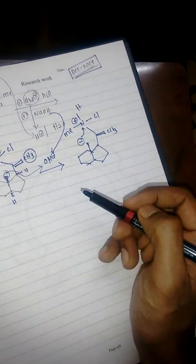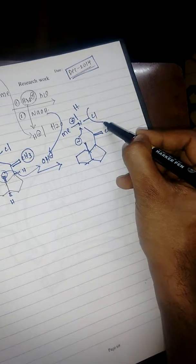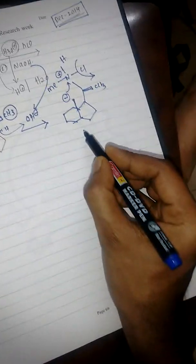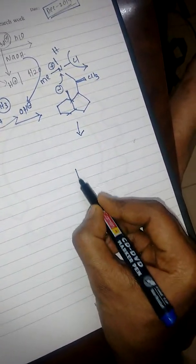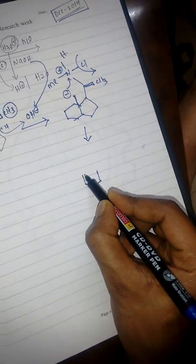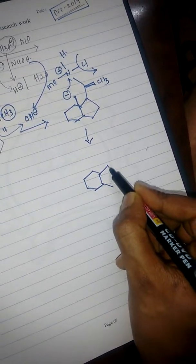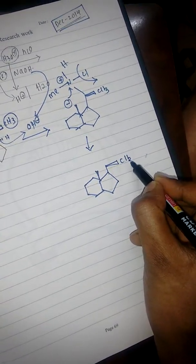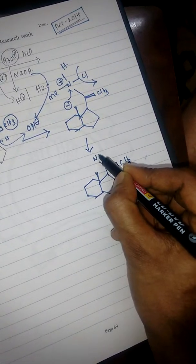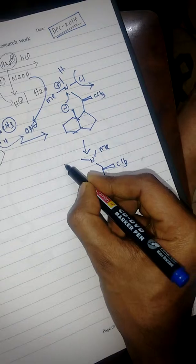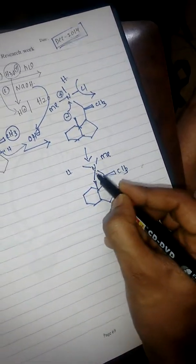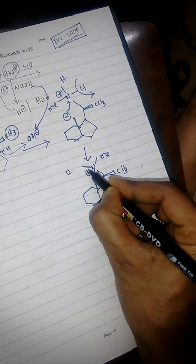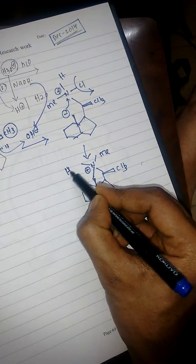Here we have methyl, Cl and H. Which is a good leaving group? Cl is a good leaving group compared to methyl groups, because of that we will remove Cl as Cl-. So we will get methyl, H, and still there is a positive charge. That positive charge will be removed by taking out this hydrogen.